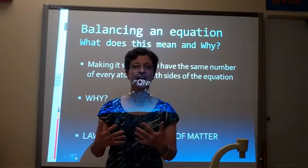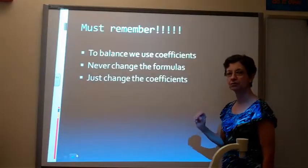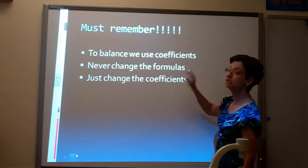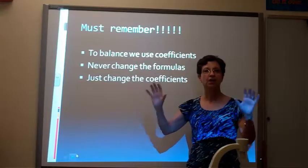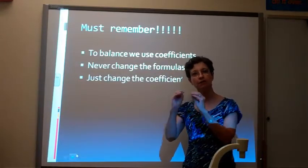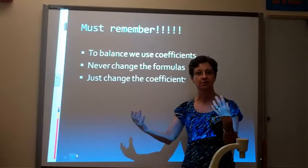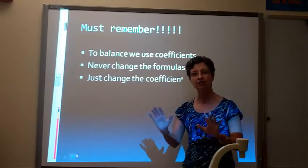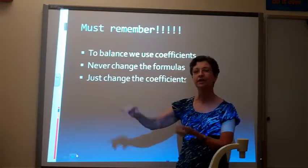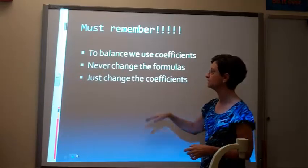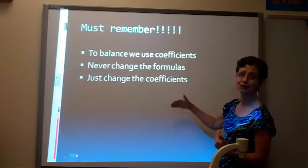The only thing happening during a chemical reaction is rearranging of atoms. There are a few things you must remember — tricks of the trade. First of all, to balance an equation you always use a coefficient. Do not touch subscripts. Subscripts are part of the formulas — you already learned how to place those correctly based on charges. Here, we're only touching coefficients — only the big number in front of each formula.